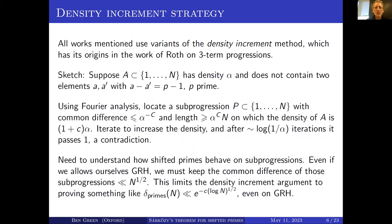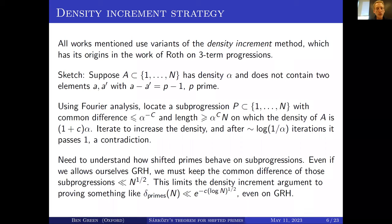If you work out what this gives — even using the generalized Riemann hypothesis — this limits the density increment argument to proving something like that delta_primes(n), the biggest density of a subset of {1,...,n} with no two elements differing by a shifted prime, is something like e^{-√(log n)}. A bit better than Zoe Wang's bound of e^{-(log n)^{1/3}}, but not all that much.